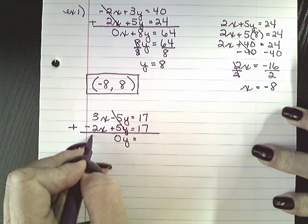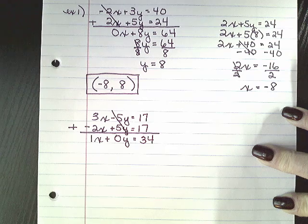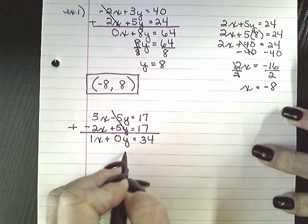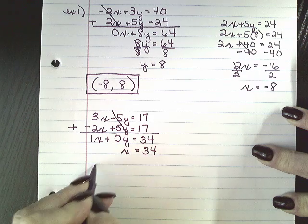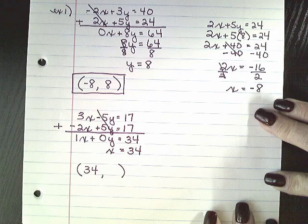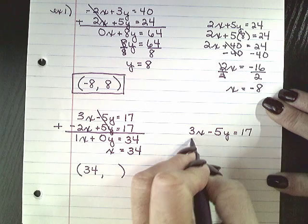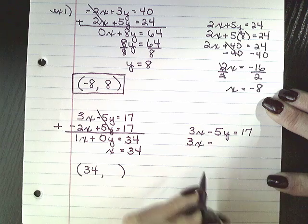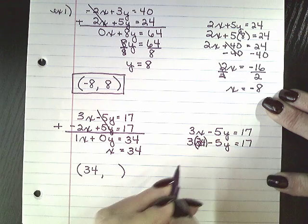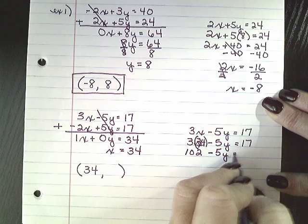3x plus negative 2x is going to give me 1x and 17 plus 17 equals 34. So that 0y we know disappears because anything multiplied by 0 is 0. So I am left with x equals 34. So my solution has an x of 34 but now I need to find my y. So I think I'm going to try using my first equation this time. So 3x minus 5y equals 17. 3 times 34, sorry, minus 5y equals 17.